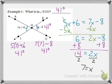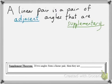So, let's look at linear pairs. A linear pair is a pair of adjacent angles that are supplementary. What do I mean by adjacent? The word adjacent means next to. In the case of angles it means that they share a side.